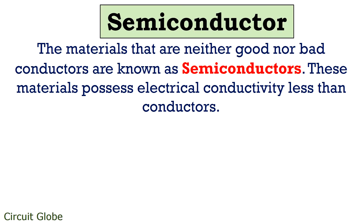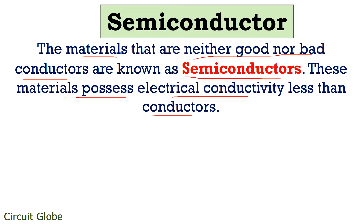Now let's see about semiconductors. The materials that are neither good conductors nor bad conductors of electricity are known as semiconductors. Basically these materials possess electrical conductivity less than conductors. Semiconductors are said to be conductive under special circumstances — at absolute zero temperature, charged carriers do not move.